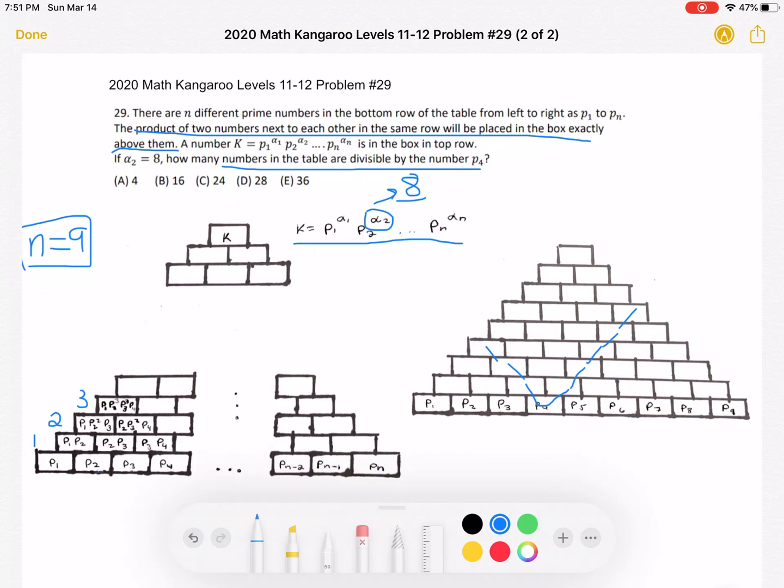And then, we also see that we can just continue on in this pattern because each box is equal to the product of the two beneath it. So, that drawing shows the boxes that are divisible by P4.